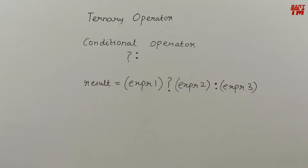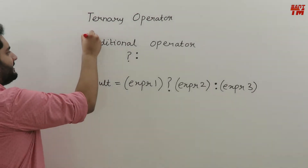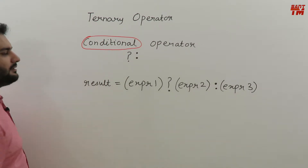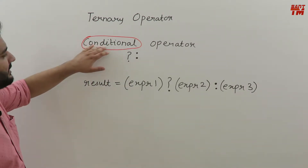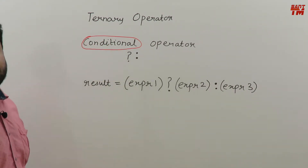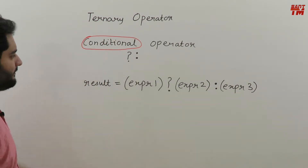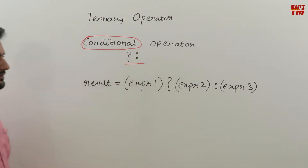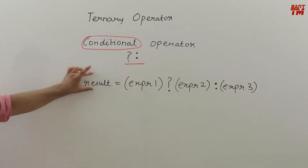In the category of operators we have unary, binary, and ternary operators. Now we are going to study ternary operators. In C language there is only one ternary operator, and that is called the conditional operator. I will explain later why it is called the conditional operator.